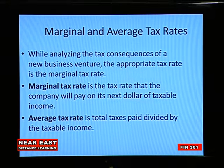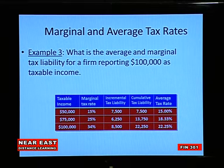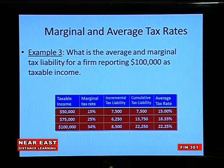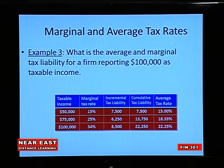There is a difference between marginal and average tax rates. How can we distinguish between them? If the company has one hundred thousand dollars of net income: the first fifty thousand dollars will be taxed at 15%, the next twenty-five thousand dollars at 25%, and the income up to one hundred thousand dollars at 34%.